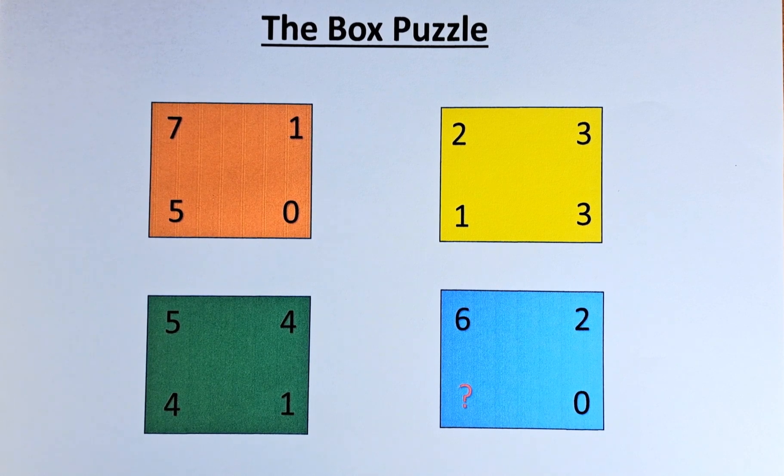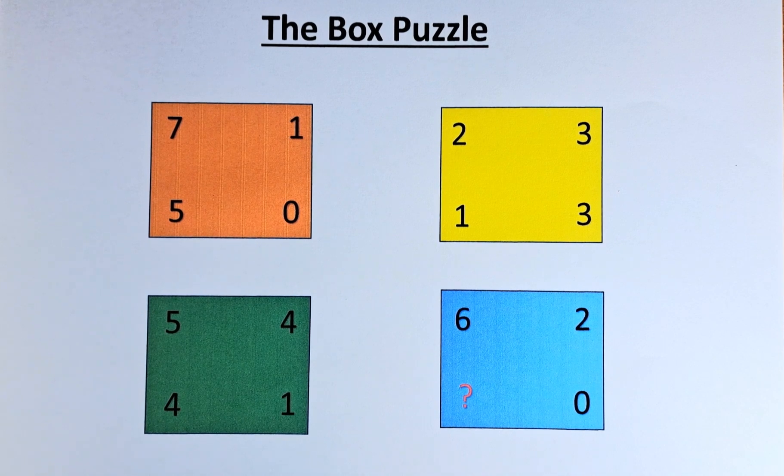In the green box, we have 5441. And finally, in the blue box, we have 62?0.